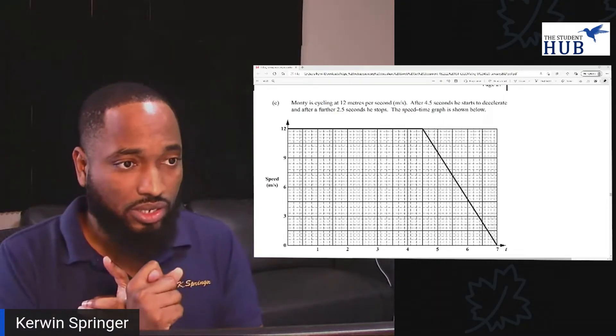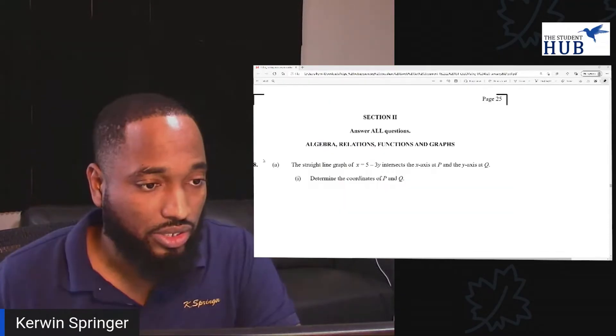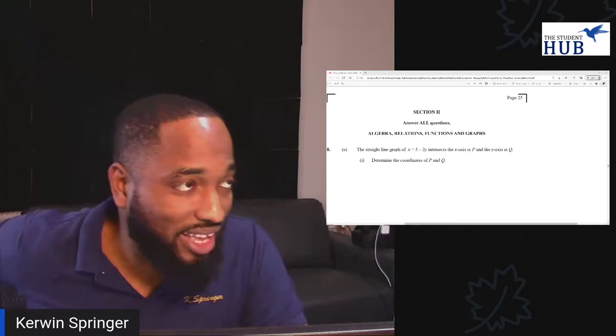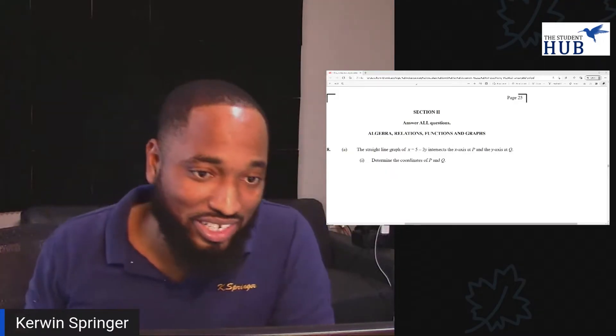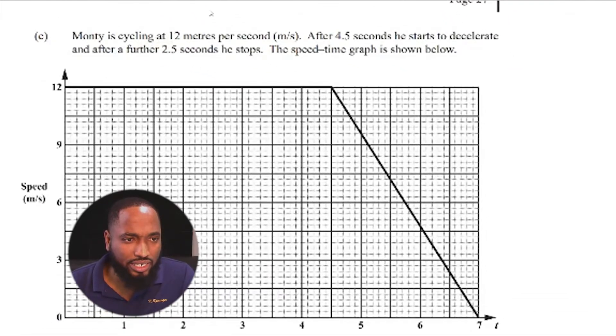So in this question, this is part C of question 8, algebra, relations, functions and graphs. Let's just jump into it. Monty is cycling at 12 meters per second. After 4.5 seconds, he starts to decelerate. And after a further 2.5 seconds, he stops. So this is going through what is happening on the graph.